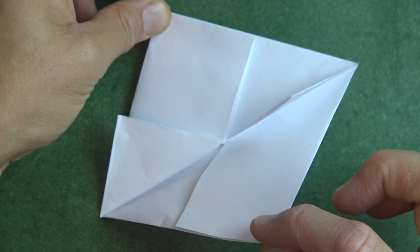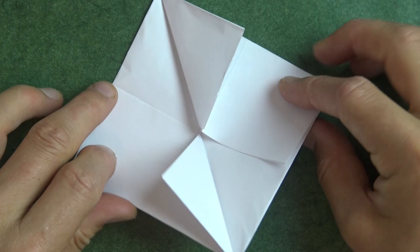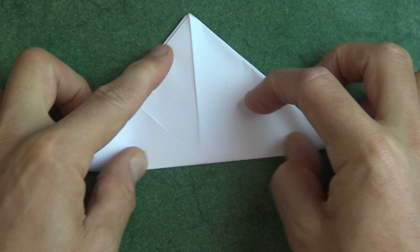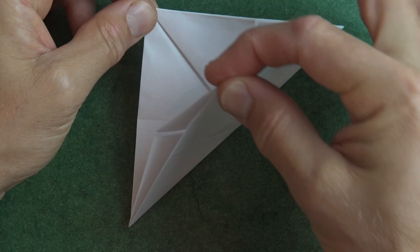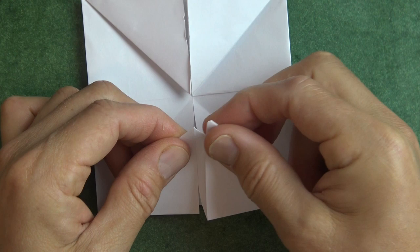And when you unfold, just hold these two corners and pull them apart like that. And now rotate and fold in half diagonally in this direction. And once again, when you unfold, just hold these two corners and pull apart like that.